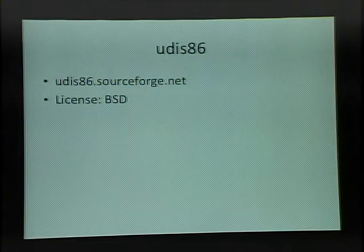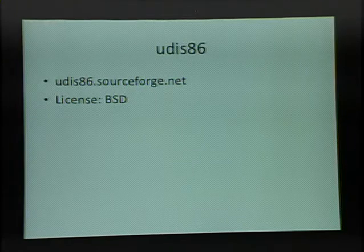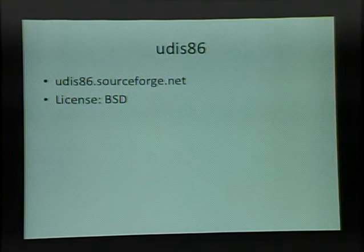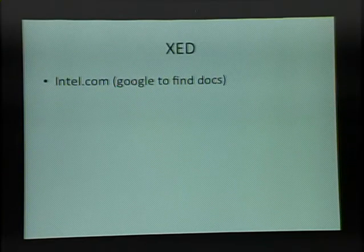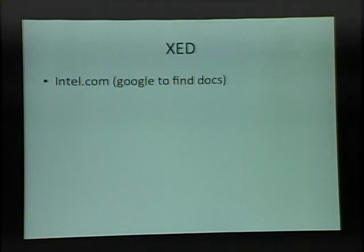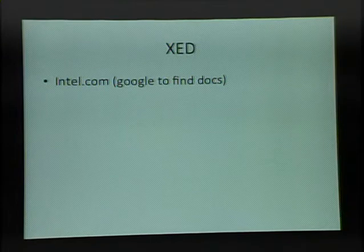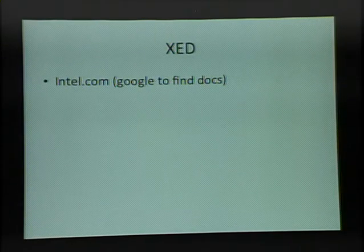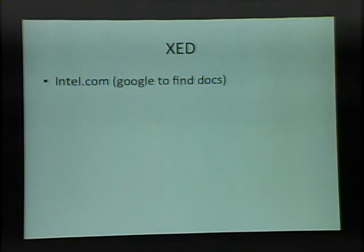Next up is Udis86. It's actually got a lot of good documentation and has tests — they're mostly commented out, but if you uncomment them you can make sure it works. Then there's Zed, which is part of Intel's big thing. It's the only one here that's not open source, but you can link against it and compile it on Windows and Linux. I have a lot of friends who swear by it, but their small example page is really, really long.